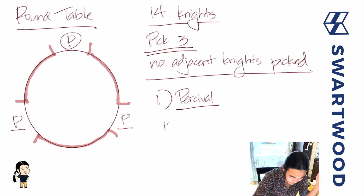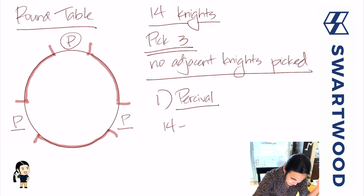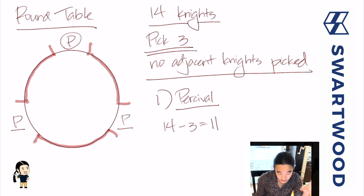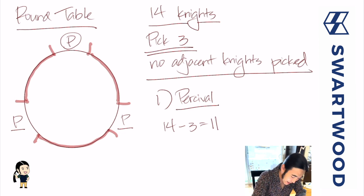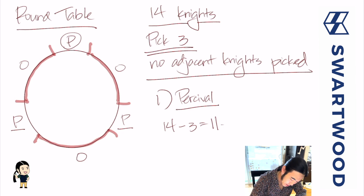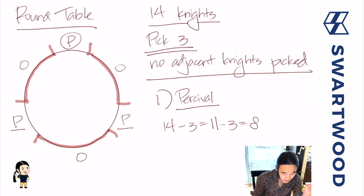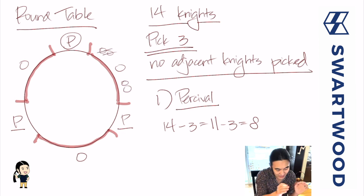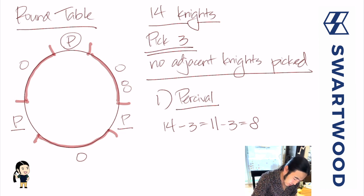Our goal is this: there are 14 knights total. We've placed down Percival and his two friends, so that's three placed down, leaving 11. The stipulation is that no picked knights can be adjacent, so to guarantee that, we'll place at least one knight between each of the picked knights - that uses up three more, leaving eight. The other eight knights can go wherever, and all that really matters is the number of people between Percival and the knight to his right. So we're looking at these buckets again: bucket number one, bucket number two, and bucket number three.